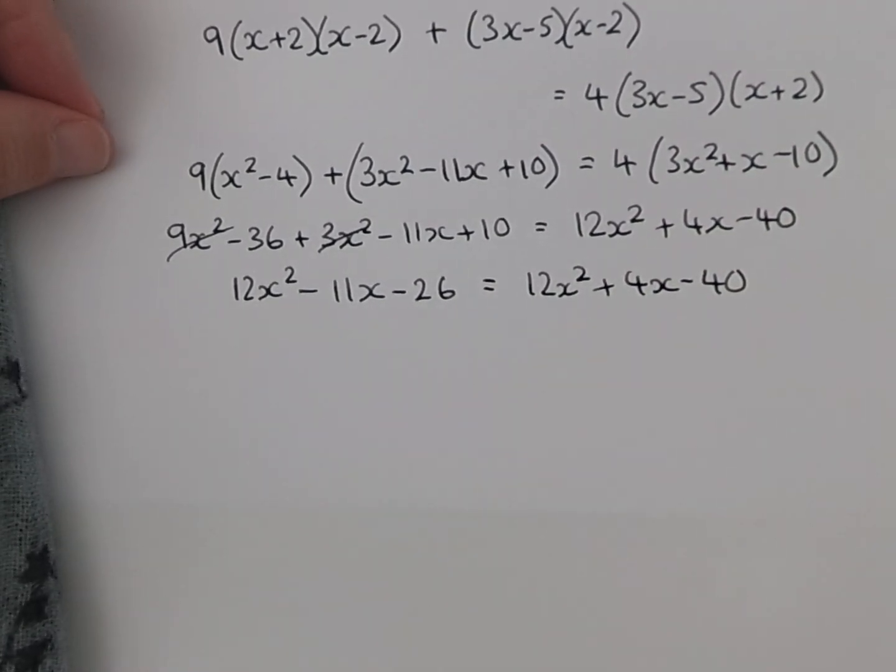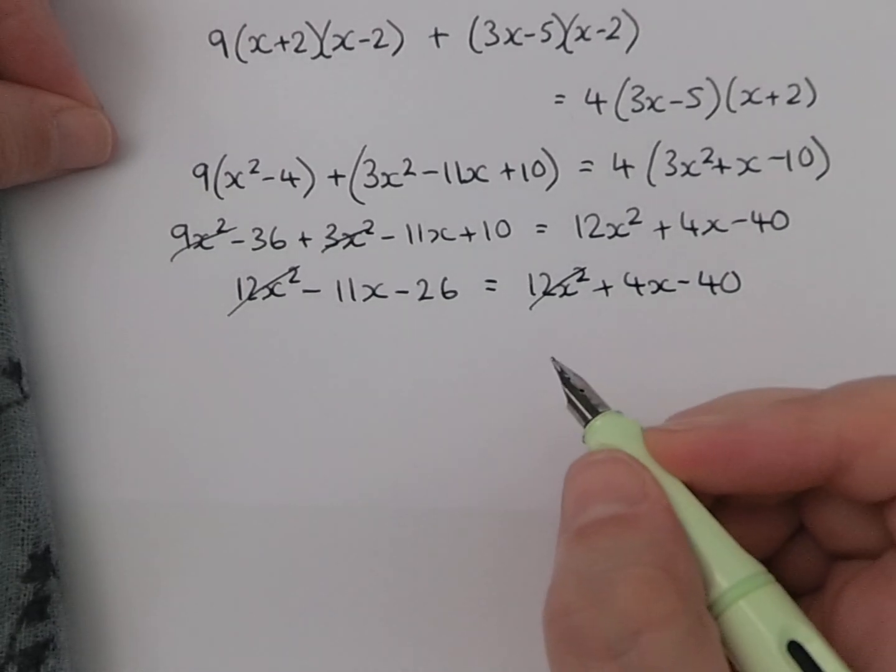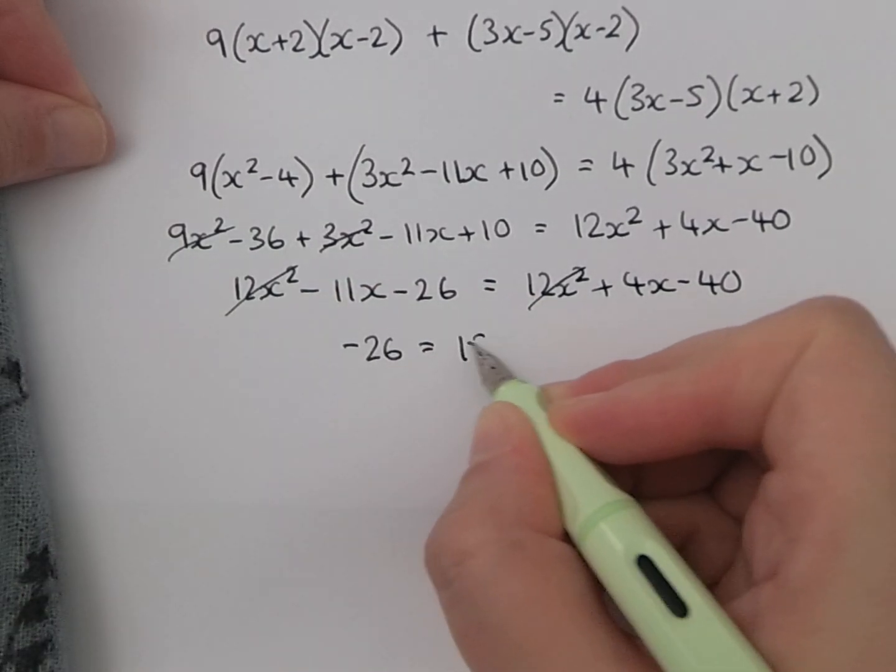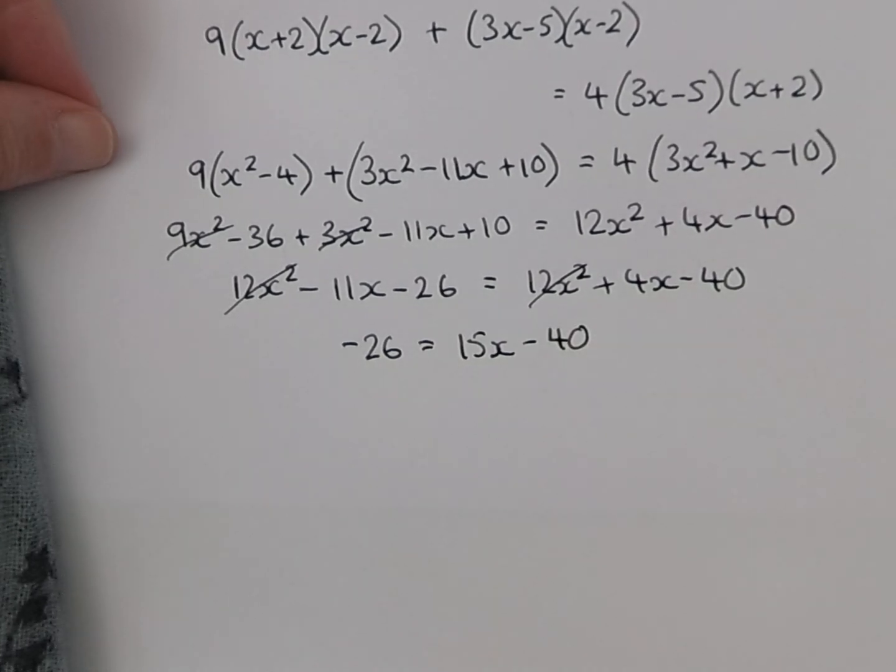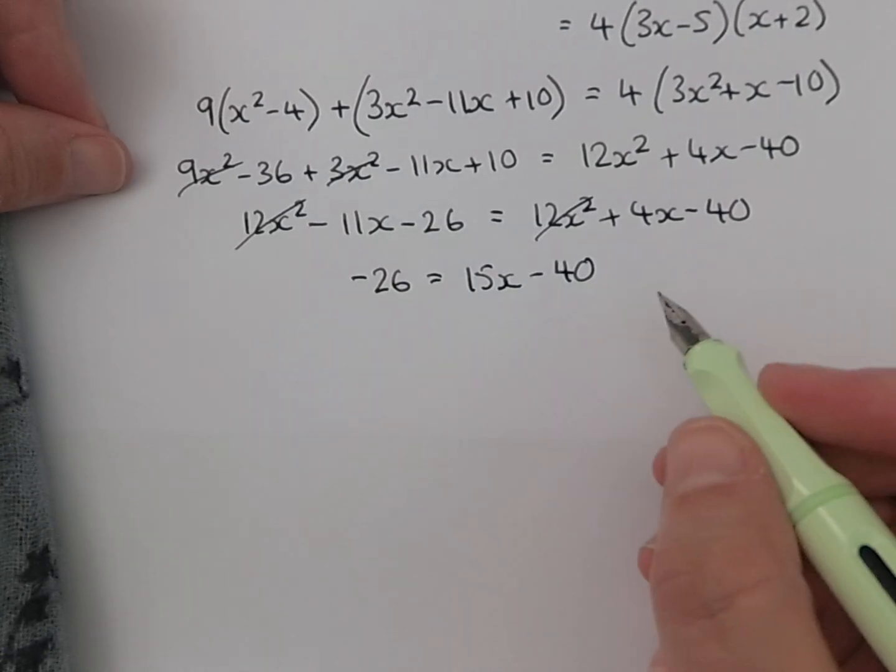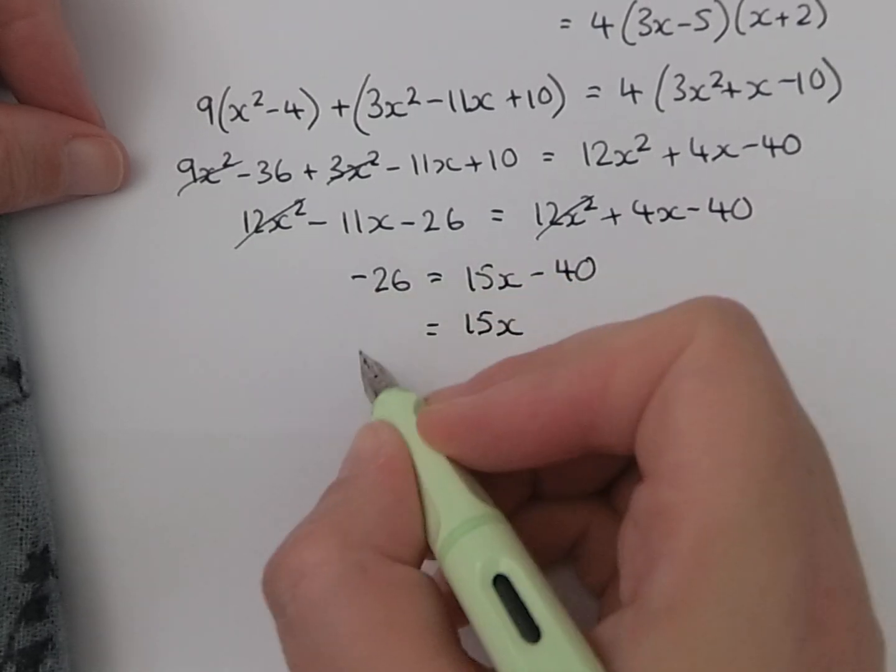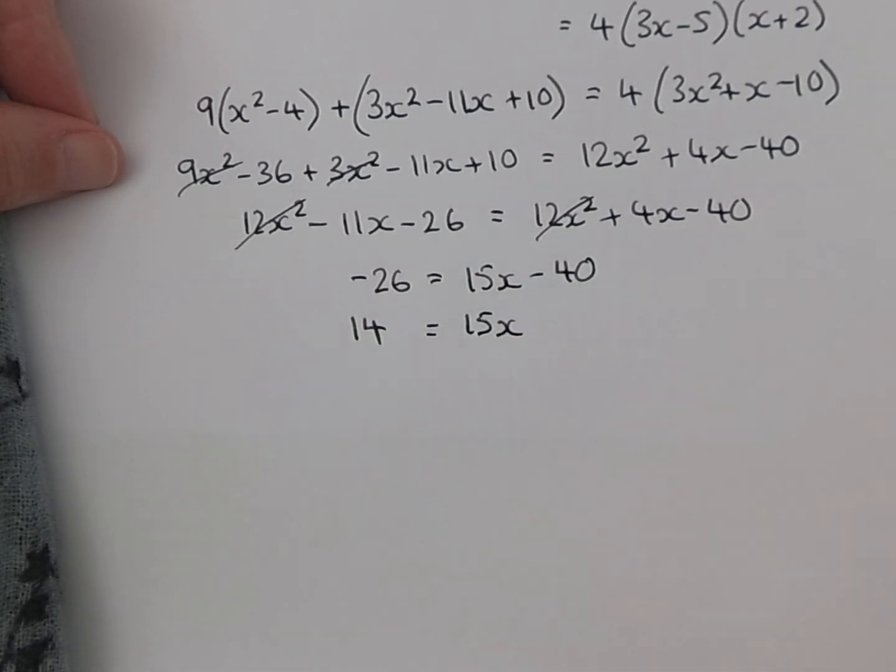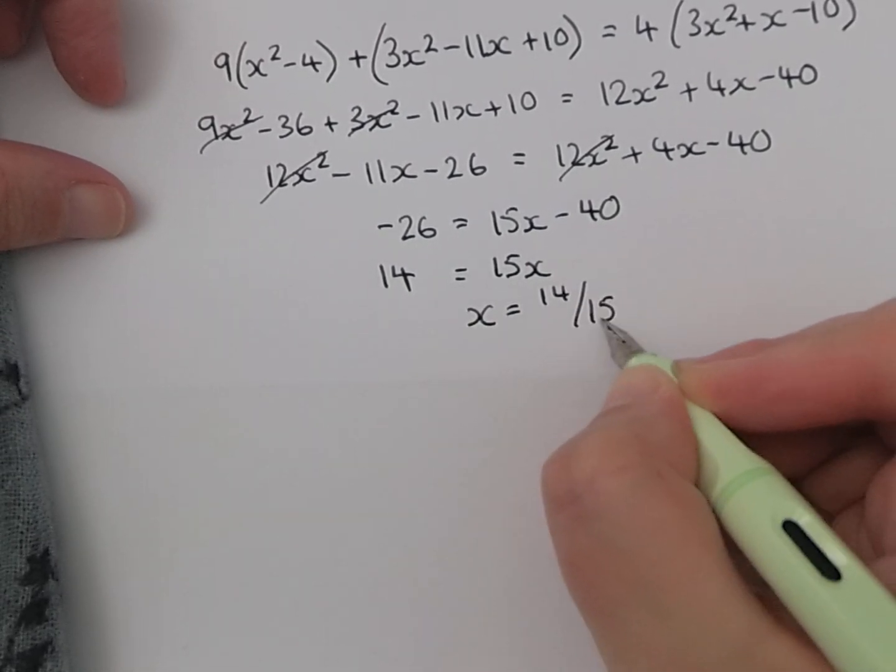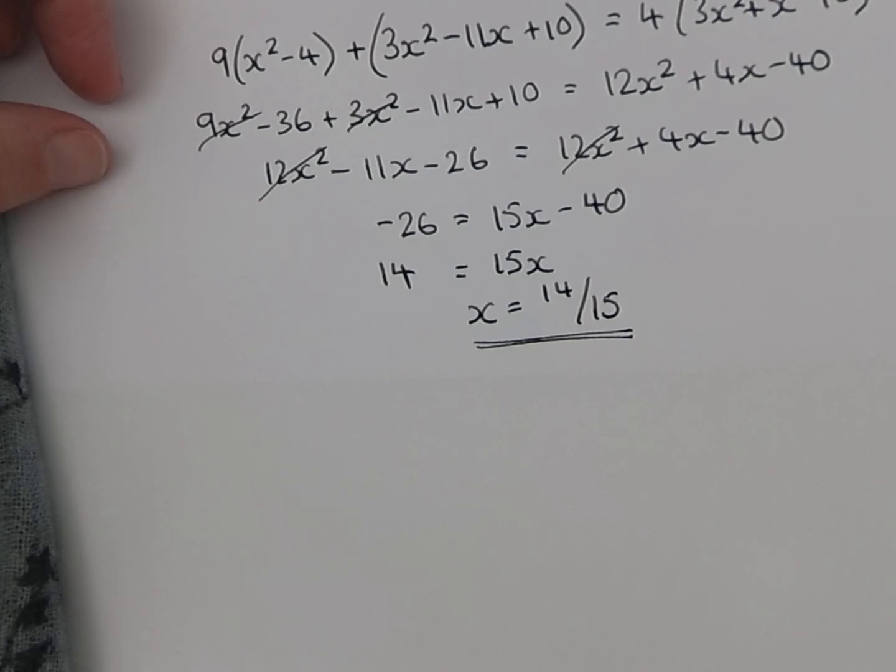We've got the same amount of x squared which is quite nice, so we can subtract 12x squared from both sides. Now I'm going to add 11x to both sides. Minus 26 equals 15x minus 40. And then I'm going to add 40 to both sides. 14 equals 15x. Now dividing by 15, x equals 14 fifteenths. Again, only one solution. Sometimes if you're left with a quadratic at the end to solve, you'll have two solutions to deal with.